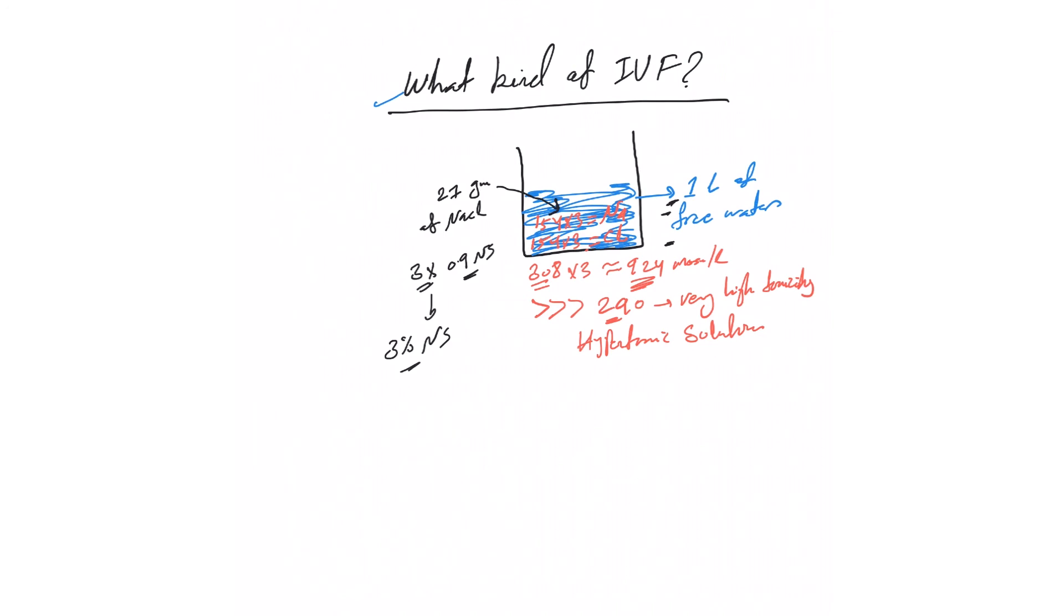So no free water. If you bring a liter of three percent normal saline, the amount of free water is zero. It has a very high tendency to stay extracellularly because of this high tonicity. Actually, this will drag free water out of cells, leading to cell shrinkage.